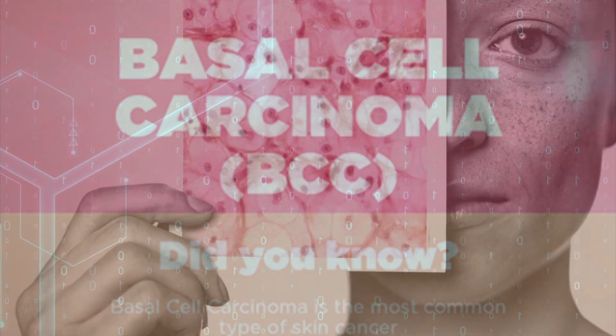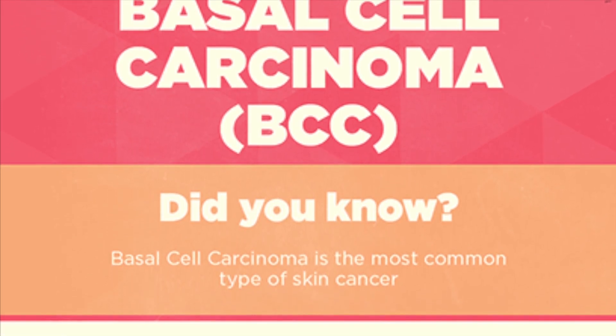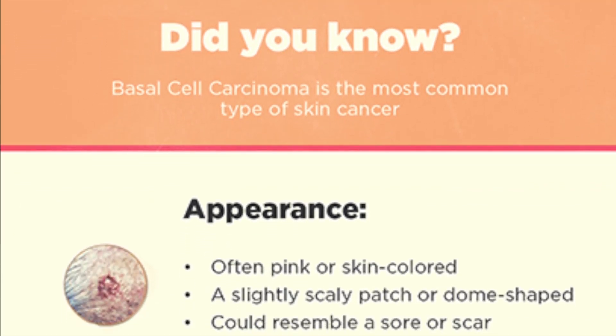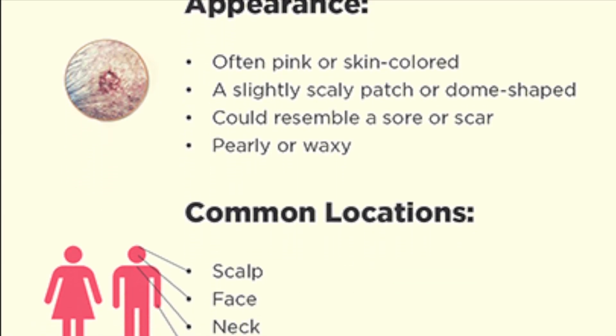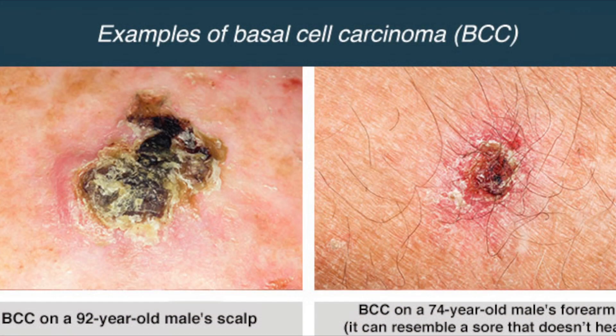Basal cell carcinoma is the most common skin cancer. It usually occurs in sun-exposed areas of your body such as your neck or face. Signs may appear as a flat flesh-colored or brown scar-like lesion, a bleeding or scabbing sore that heals and returns, a flesh-colored round growth, a pearl-like bump, or a pinkish patch of skin. They are common on the head, neck, and arms; however, they can form anywhere on the body including the chest, abdomen, and legs.